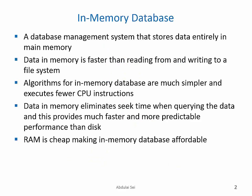Amazon ElastiCache is an in-memory database. An in-memory database is a database management system that stores data entirely in memory. Because the data resides in memory, it is faster to read and write than from the file system. The algorithms for in-memory databases are much simpler and execute fewer CPU instructions, and data in memory eliminates seek time. Today, RAM is cheap, making in-memory databases affordable.